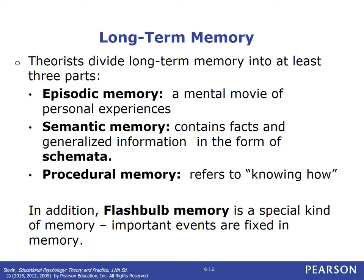Theorists divide long-term memory into three parts: episodic memory, semantic memory, and procedural memory — and a fourth one I'll talk about. Episodic memory is when you remember something like a movie, a series of episodes — for example, looking out the window at my brother when I was very young watching him ride a bike. Semantic memory is how we study and organize information into what's called schema or schemata — for example, math facts, state capitals, organized lists and sub-lists.